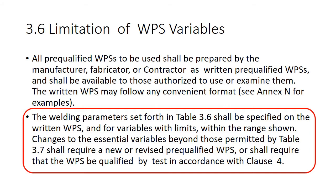If we read what's in the red box: the welding parameters set forth in table 3.6 shall be specified on the written WPS, and for variables within limits within the range shown. And this is what really causes people some angst and disruption — they're like, okay, so now what do I do? How do I know where to go and what to do?